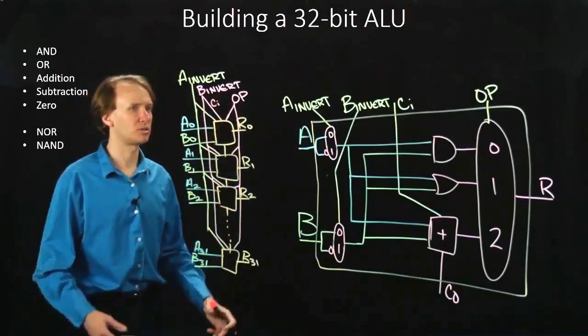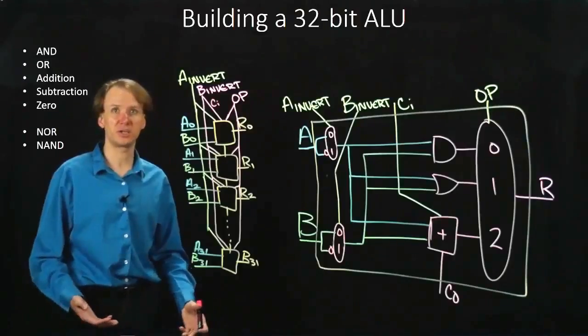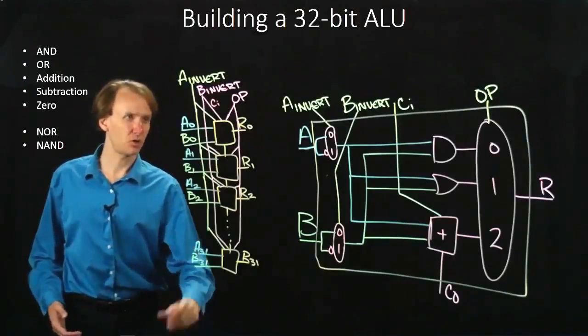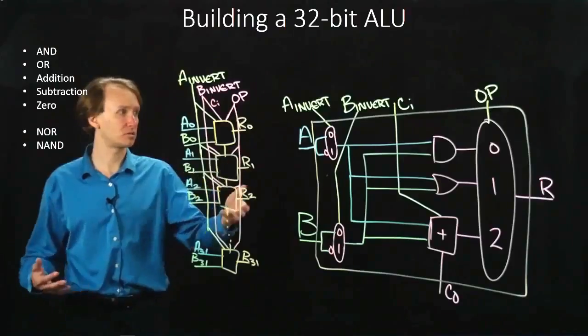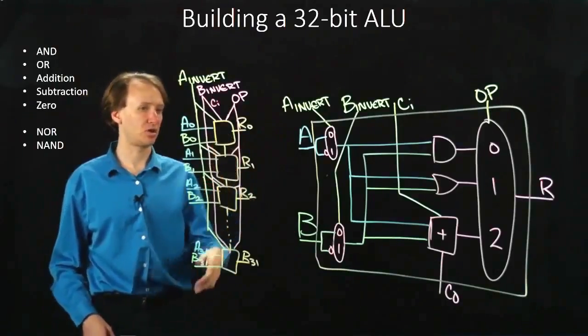So I can make a little note that that's also carry in as well as B invert. But that's only true for the top ALU. For all the others, the carry in is bound to the previous carry out.